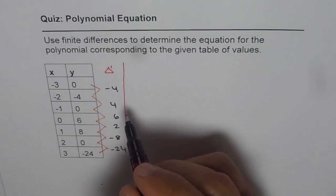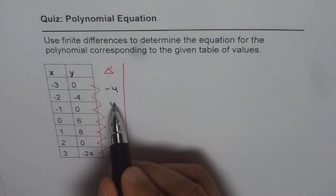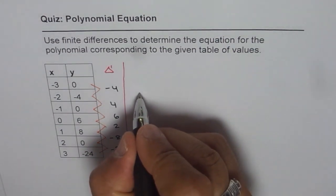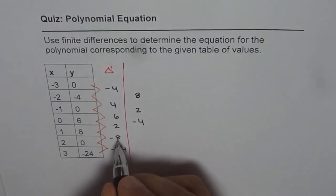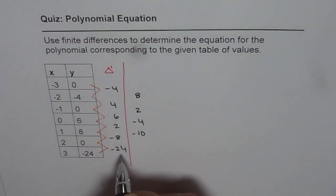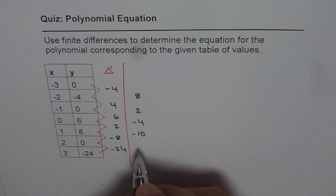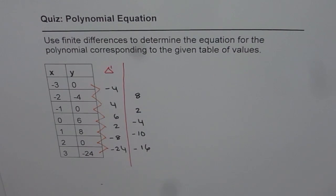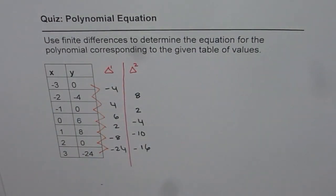So let's find the second difference. We do 4 minus minus 4 to get plus 8, then 6 minus 4 gives 2, 2 minus 6 gives minus 4, minus 8 minus 2 gives minus 10, and minus 24 minus minus 8 gives minus 16. That is the second finite difference, which is also not constant.